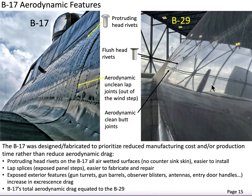Even though the B-29 is over twice the size of the B-17 based on max takeoff weight, they actually have equivalent aerodynamic drag. The B-17 was designed, unlike the B-29, in the 1930s to minimize manufacturing costs and production flow time rather than to decrease its aerodynamic drag. Let's take a look at a comparison of the features of the B-17 versus the B-29, examining the aerodynamic differences mostly from this graphic.